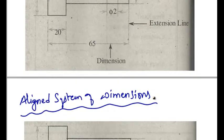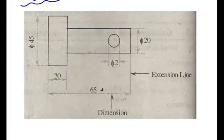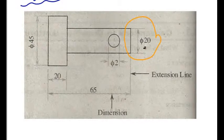Now what is aligned system of dimensions? In this method of dimensioning, the dimensions are placed parallel to the width and above the dimension line, preferably in the middle as shown in the figure. The dimensions are placed beside the dimension line, preferably in the middle.